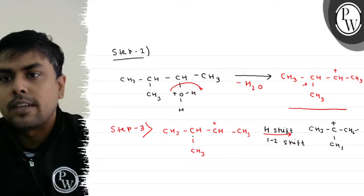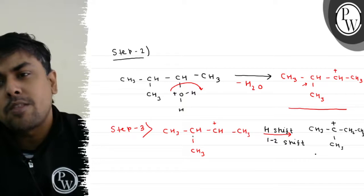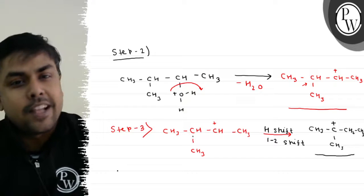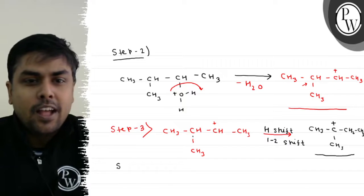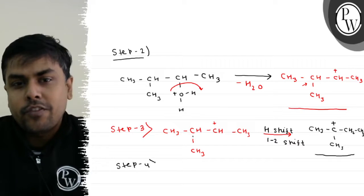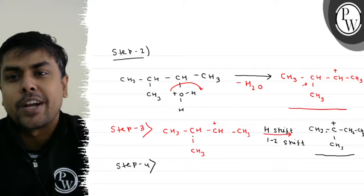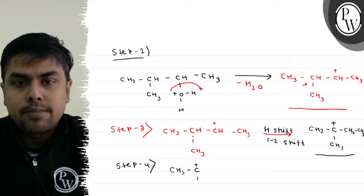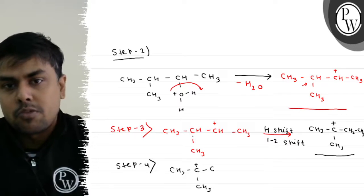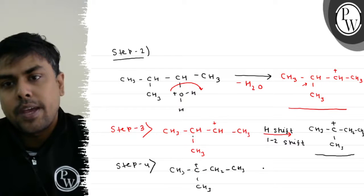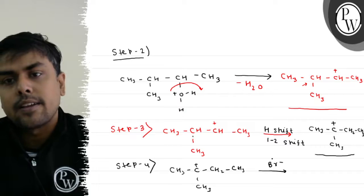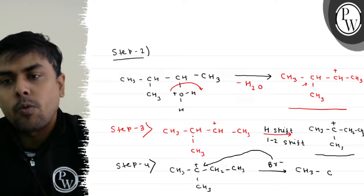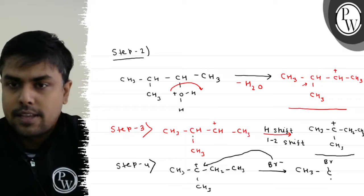Now I have CH3-C(+)(CH3)-CH2-CH3, a much more stable carbocation. Now I have a nucleophile. In HBr, I have used H+. Step 4 is attack of nucleophile on the most stable carbocation. So CH3-C(+)(CH3)-CH2-CH3 is attacked by Br-. The product is CH3-C(Br)(CH3)-CH2-CH3.